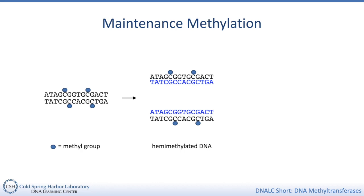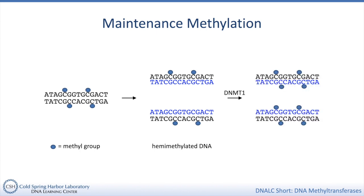Now we have two copies of our DNA and each is what we call hemimethylated — one strand methylated, one strand not methylated. DNMT1 is recruited to newly synthesized DNA. We don't know exactly how this recruitment works, but the N-terminal part of the protein interacts with other proteins that help bring DNMT1 to the location of newly replicated DNA.